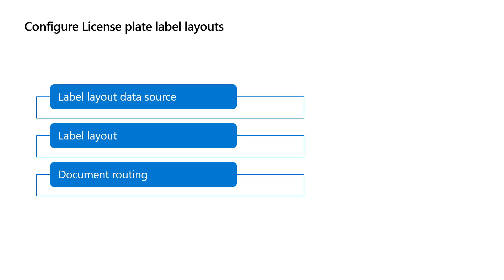LabelLayout is not that different from the document routing layout in terms of configurations. In LabelLayout we have to configure the data source that has the required tables used in the layout. Then we should define the LabelLayout by specifying the ZPL code lines through the LabelLayout form. Finally, we have the document routing that specifies which orders trigger the label printing and the target layout.